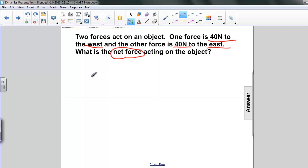Well, let's look at these. We have force 1, and we know that force 1 is 40 newtons, and we know that force 2 is also 40 newtons in magnitude. But the first one is pointing west, and the second one is pointing east. Let's look at this diagrammatically.